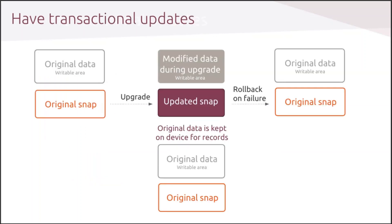Updates are either pushed automatically from the store or requested on demand from the device. Upgrades are inherently secure as the original package's binary and data are kept until the new release is installed. If the upgrade process fails or the new service doesn't start or breaks the system, an automatic rollback is performed. Snaps are compressed, which allows optimization in bandwidth and time. Additionally, during upgrades, only delta data between versions is transferred, which makes it optimal for limited connectivity scenarios.